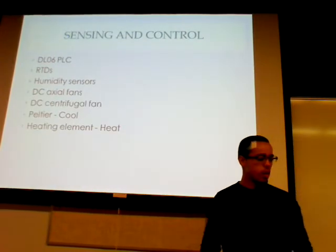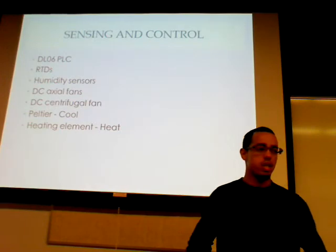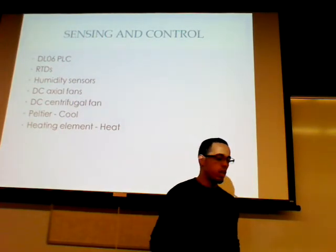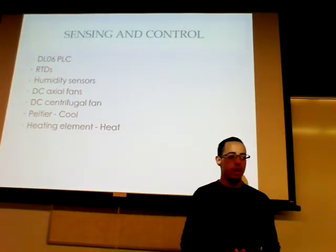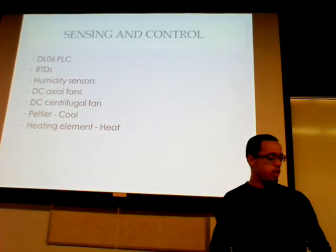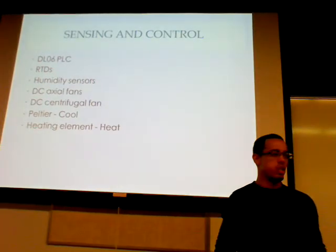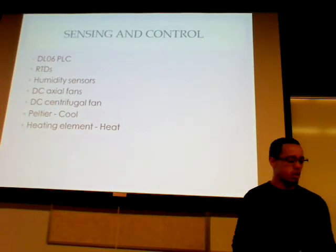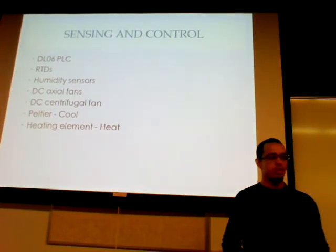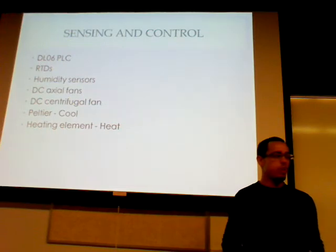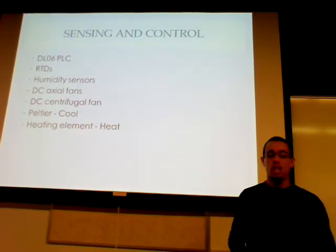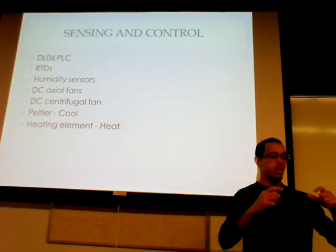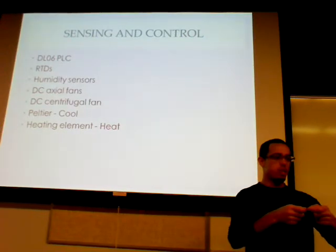To control these fundamentals, I'm going to be using a DL06 as my main controller. This will control the output devices on my system. RTDs are going to be used to measure the temperature inside each of the rooms. My humidity sensors, I haven't actually determined which ones I'm going to use yet. I'm going to have four DC axial fans that are going to be placed at the location for vents in each of the rooms.